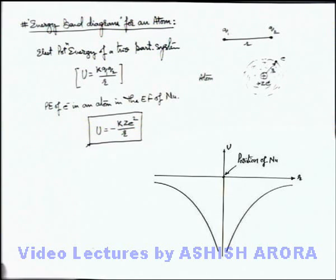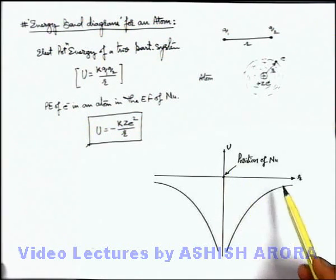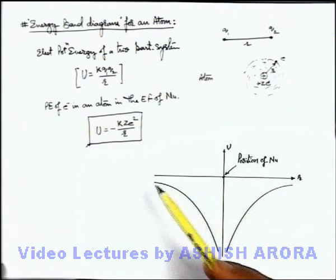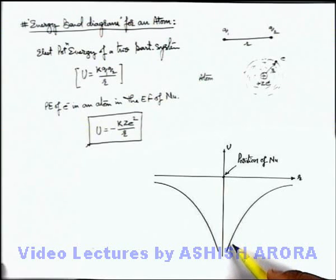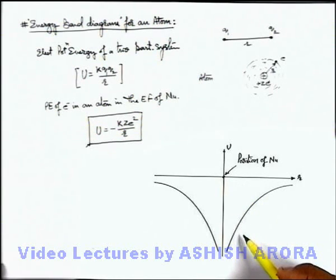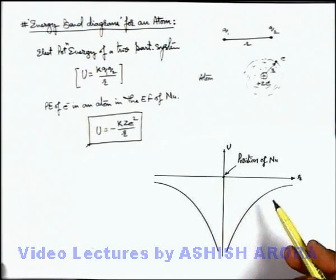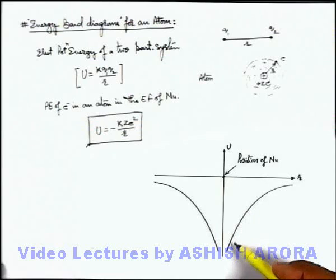In this diagram, you can see the curve of potential energy versus the distance of electron from nucleus is given by this expression, which is an inverse proportionality relation. So the curve will be a rectangular hyperbola, and it is drawn in the negative direction of potential energy because the electron is in a bounded system, so potential energy will be negative.